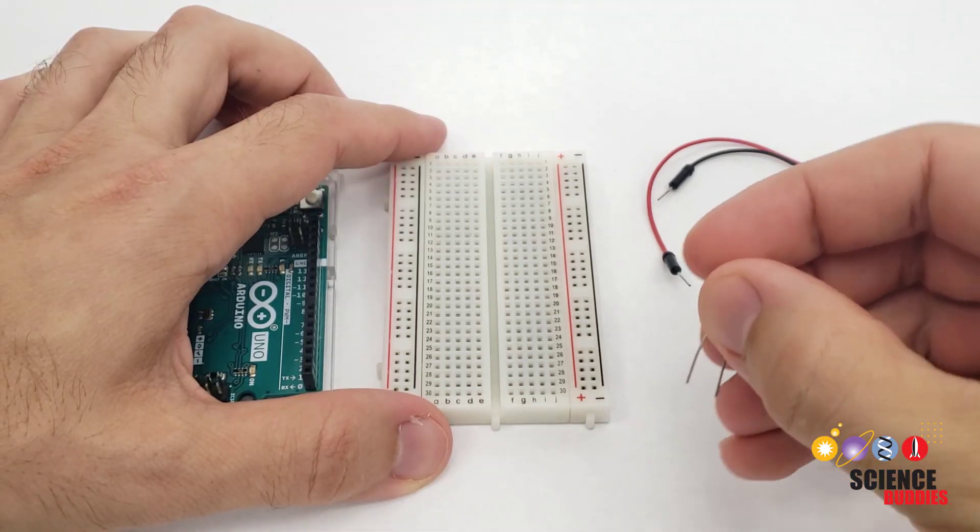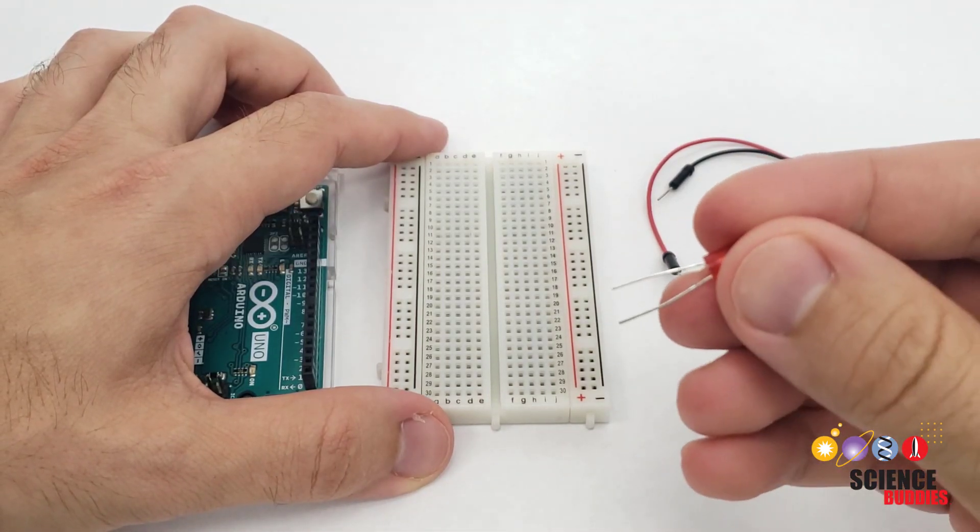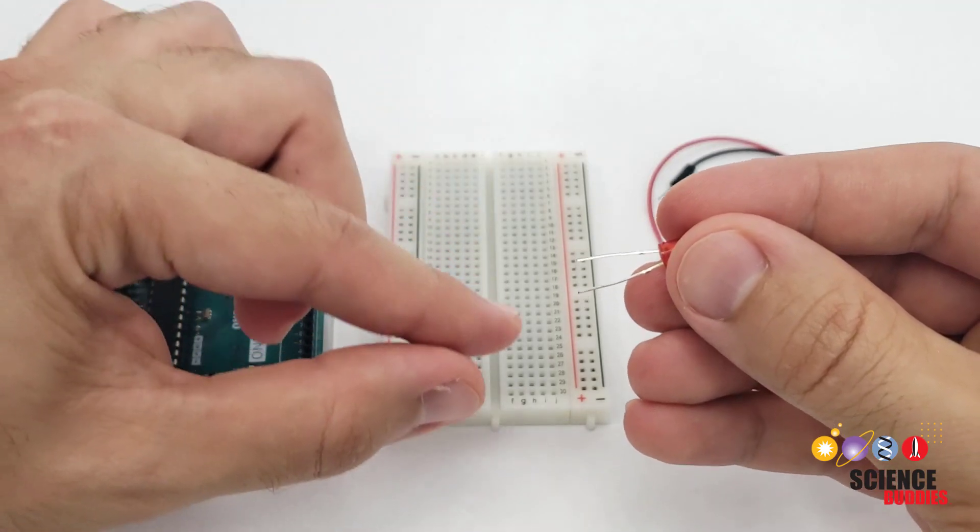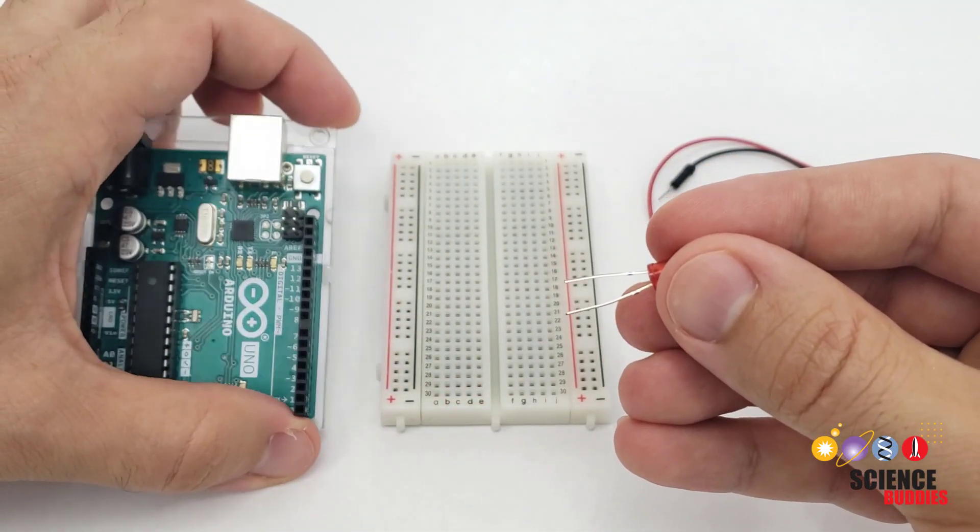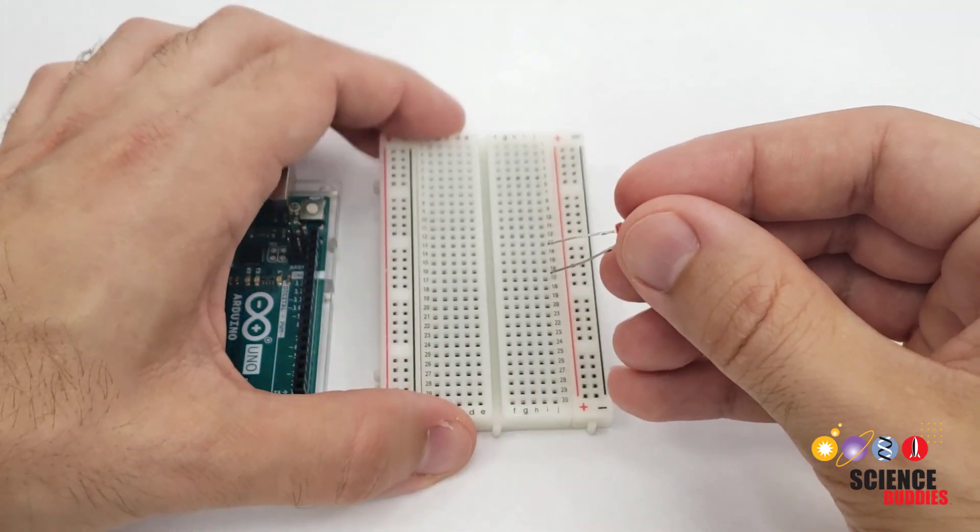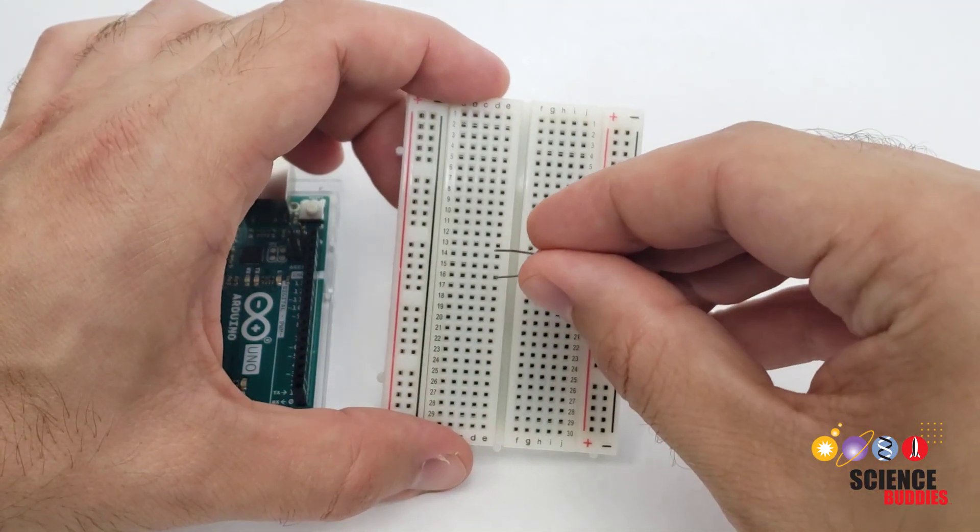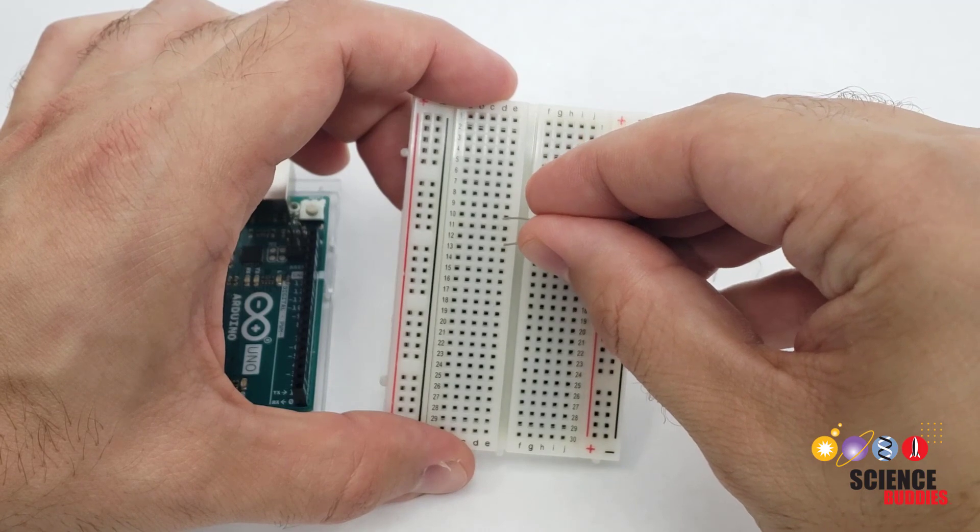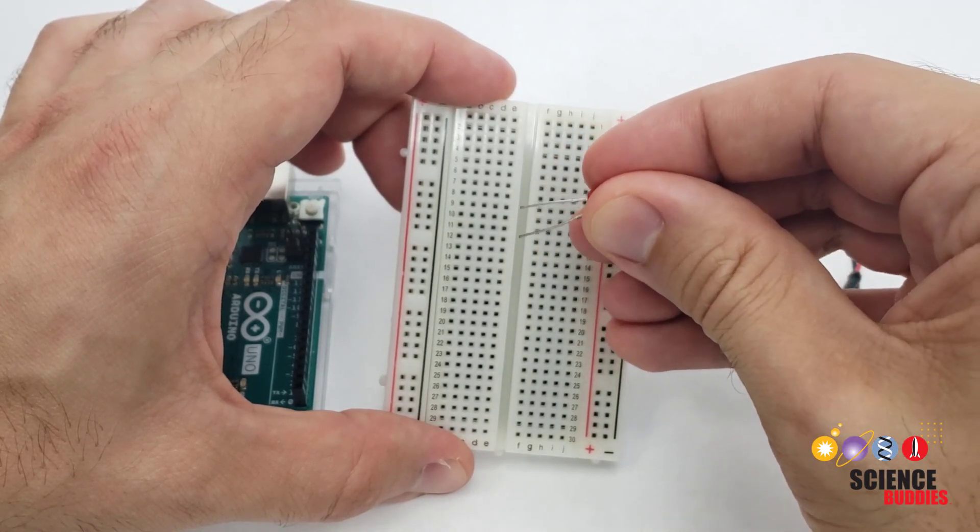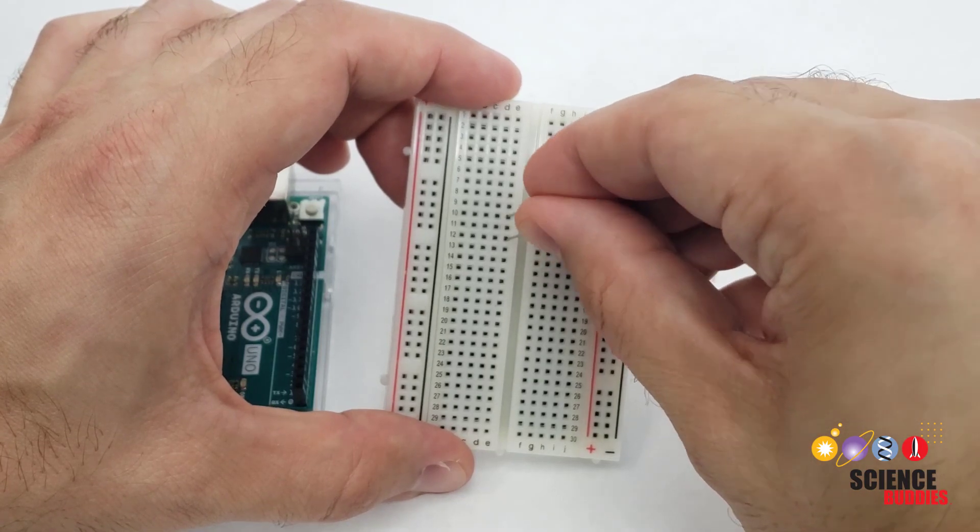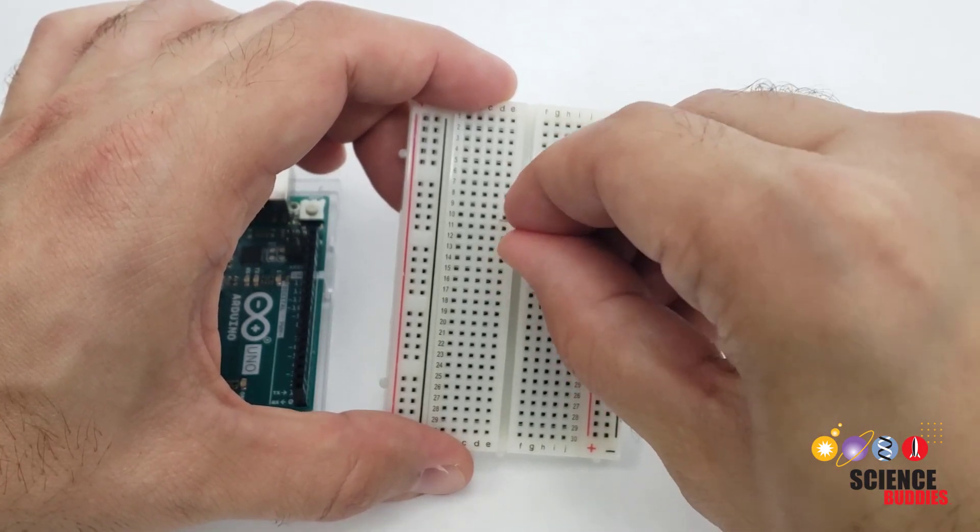Let's start with the LED. Look at it closely and notice that it has a long leg and a short leg. The long leg is the positive side that we'll be connecting to one of the Arduino's pins. Pick two rows in the breadboard to insert the LED legs. It doesn't matter exactly which rows, but make sure you keep track of which end is the long leg or positive side. I'm going to put the LED legs in rows 10 and 12.